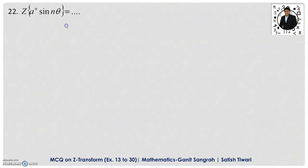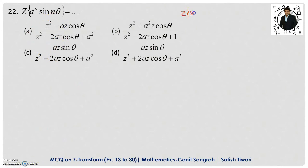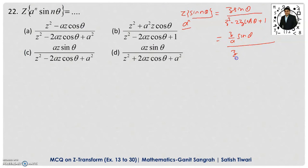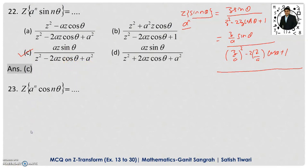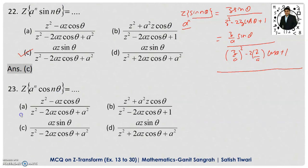Example 22: Z-transform of aⁿ·sin(nθ). Recall Z-transform of sin(nθ) = z·sinθ/(z²−2z·cosθ+1), then apply the damping rule by replacing z with z/a. Numerator becomes (z/a)·sinθ, denominator becomes (z/a)² − 2(z/a)cosθ + 1. After simplification, option C is correct. Example 23: Z-transform of aⁿ·cos(nθ) — similarly apply damping rule to the cos formula, replacing z with z/a. Option A is correct: (z²−az·cosθ)/(z²−2az·cosθ+a²).